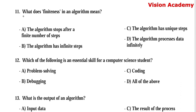Question number 11: What does finiteness in an algorithm mean? Option A, the algorithm stops after a finite number of steps. Option B, the algorithm has infinite steps. Option C, the algorithm has unique steps. Option D, the algorithm processes data infinitely. Here, option A, the algorithm stops after a finite number of steps, is the right answer.